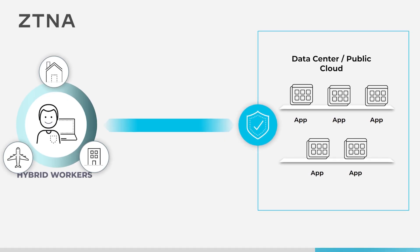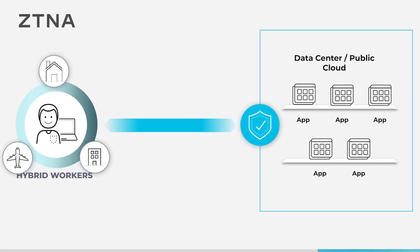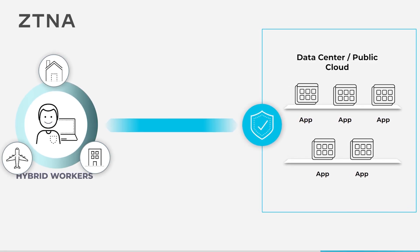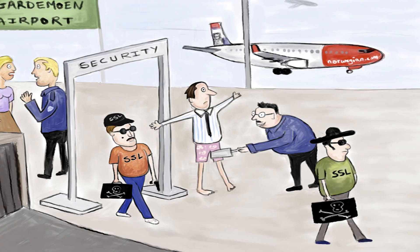ZTNA is all about providing secure access to private applications, whether they be in the private data center or the public cloud. The products that fall into this ZTNA category vary widely in their ability to execute on core zero trust principles. Instead of an airport analogy, with the help of my friend Adrian I'm going to show you a live demo of what a product that doesn't quite execute on zero trust network access actually looks like.